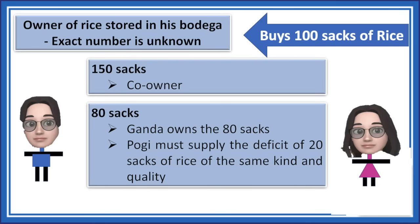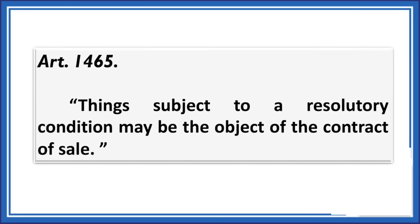Finally, Article 1465: 'Things subject to a resolutory condition may be the object of the contract of sale.' Things which are subject to a resolutory condition can be the object of a sale. A resolutory condition is an uncertain event which, if it happens, extinguishes the obligation. You can sell an object that is still subject to a resolutory condition. That's it — thanks for watching. If you find this video helpful, please like and subscribe and click the bell button to be notified of new uploads. Thanks again, bye!